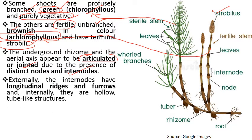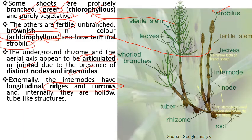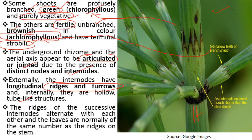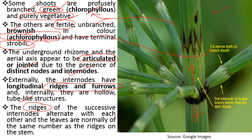Externally, the internodes bear longitudinal ridges and furrows, and internally they are hollow, tube-like structures. The ridges alternate with the internodal ridges of the next internode. The number of ridges present in the internode equals the number of leaves present on the stem.